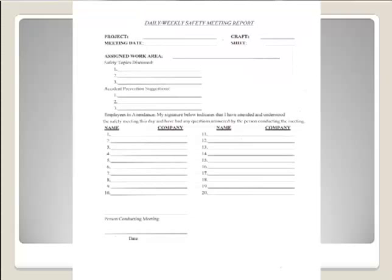Daily or weekly toolbox safety meetings are another tool. Generally a topic is issued by the corporate safety director, covered with the crew with hands-on demonstrations, safety topics discussed, and any accident prevention suggestions noted. Everyone signs off — a way to document ongoing training.